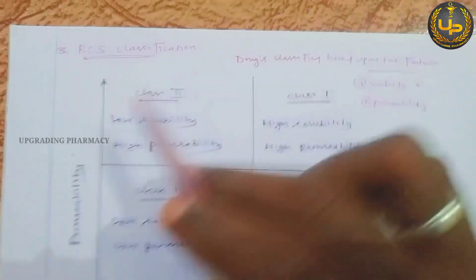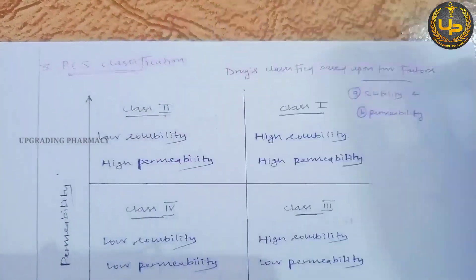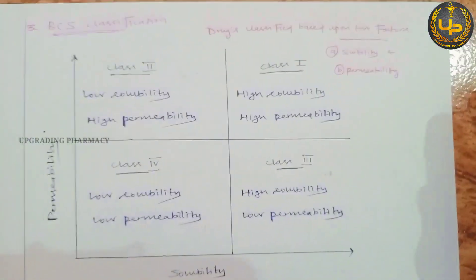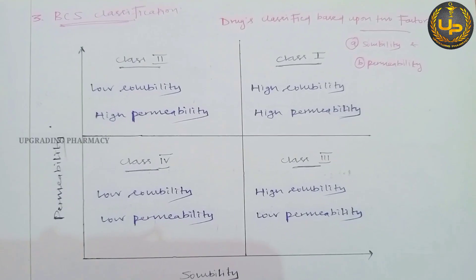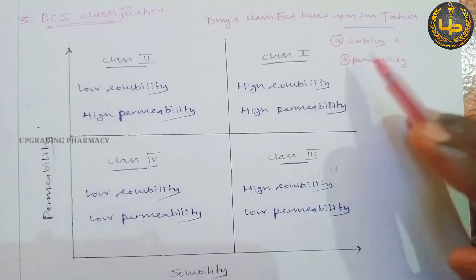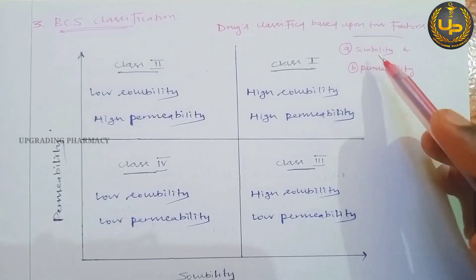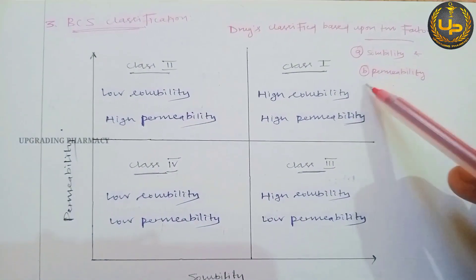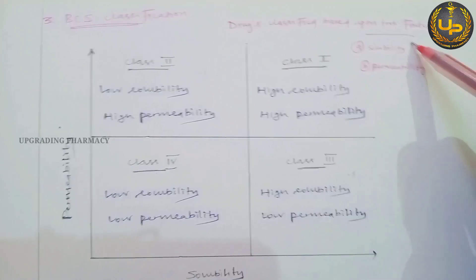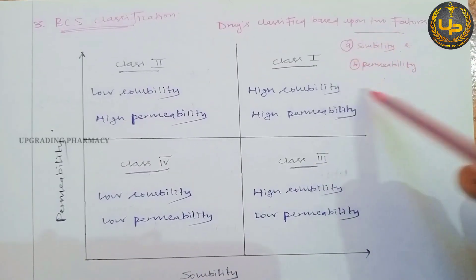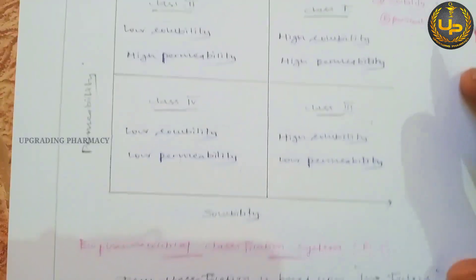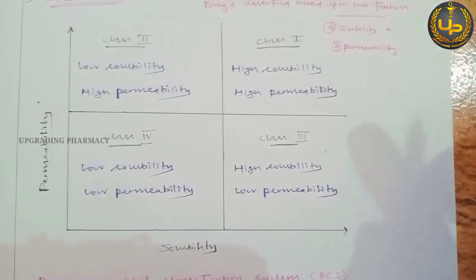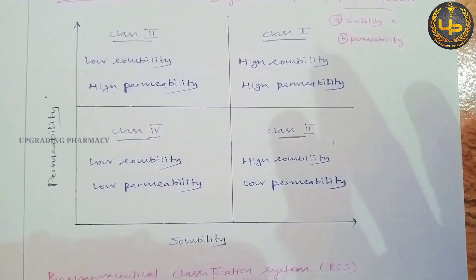The Biopharmaceutical Classification System classifies medicines based on mainly two factors of the drug: solubility and permeability. These two factors are mainly responsible for the bioavailability of a particular drug.